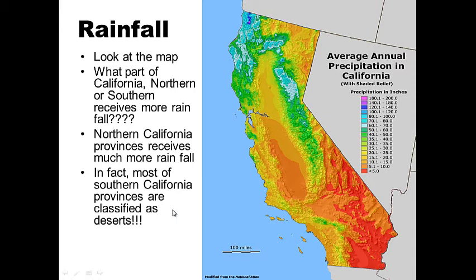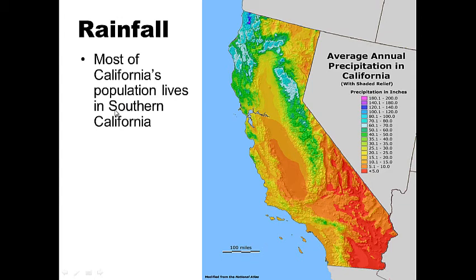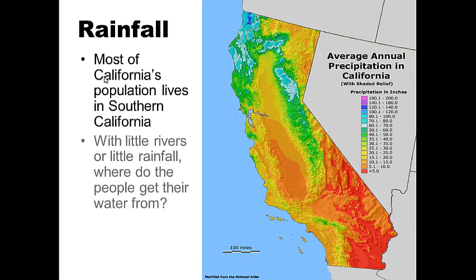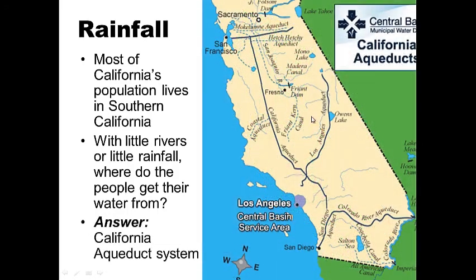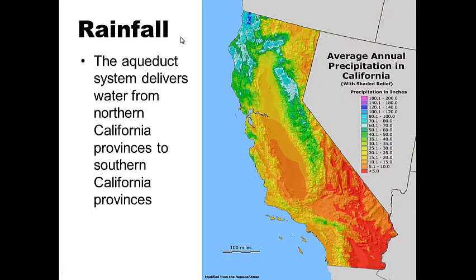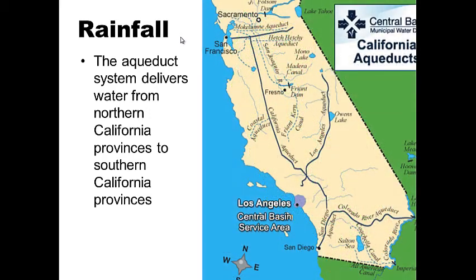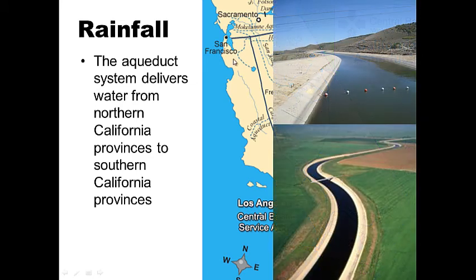Most of California's population lives in southern California — Los Angeles, San Diego — huge cities that need water. With little rainfall and living in a desert, where do people get their water? The answer is the California aqueduct system. These blue lines on the map represent man-made canals or aqueducts that bring water from northern California down to southern California. They are the lifeline for southern California — without them, they would have no water.